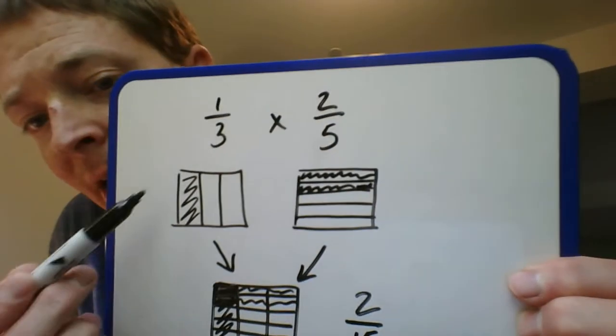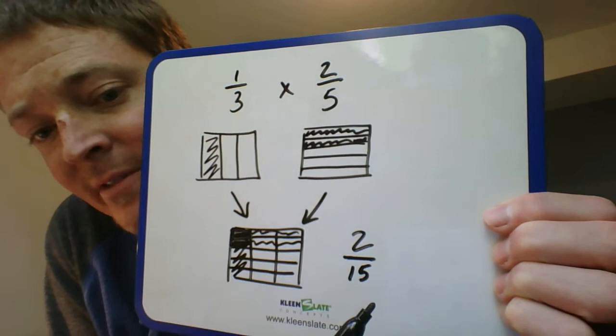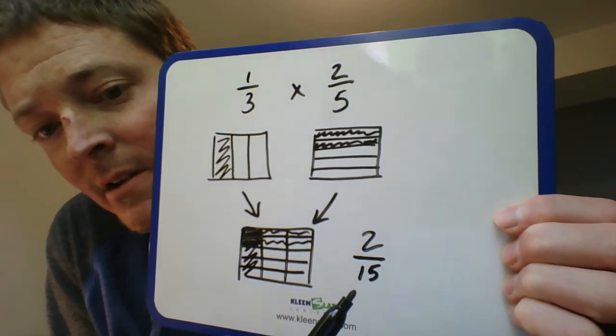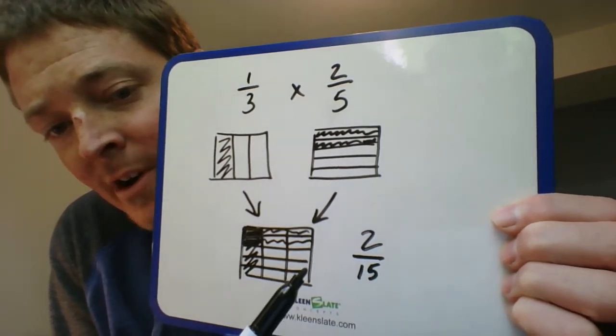And then on the bottom to check it, we can look at three times five, which is going to give us fifteen. All right, so that's where these pictures are coming from.